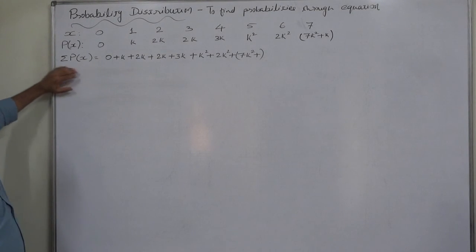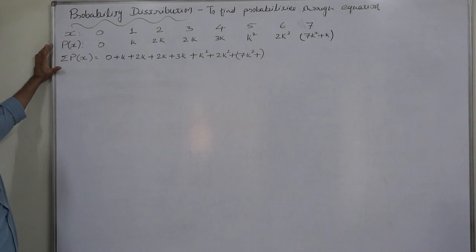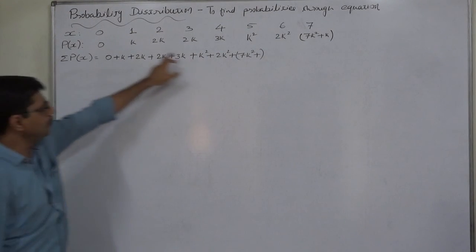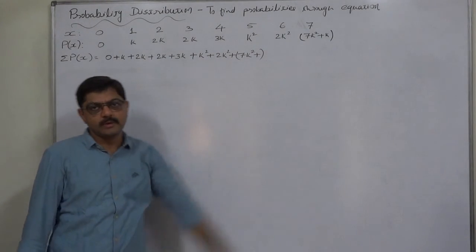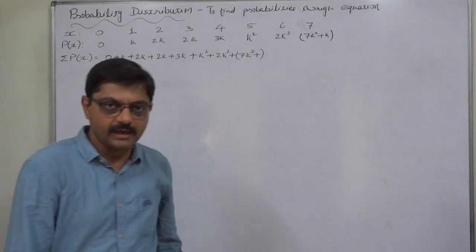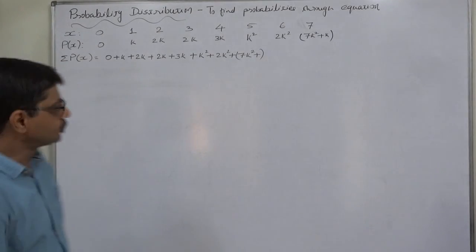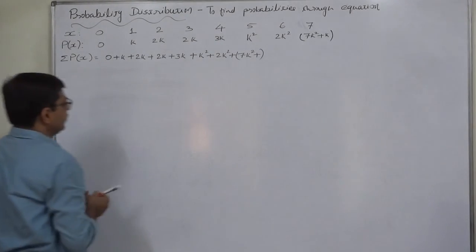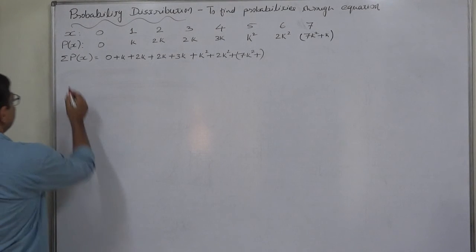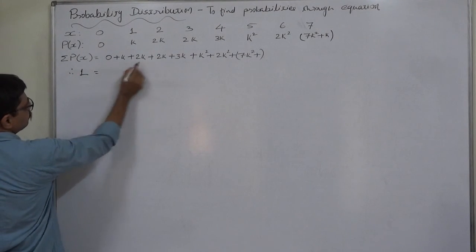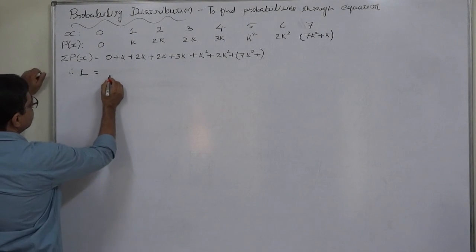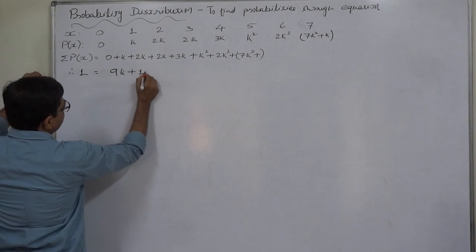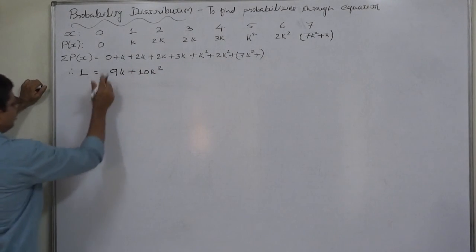As we know that in a probability distribution, the summation of all the probabilities is always 1. So the summation of all these factors is 1. Therefore, 1 equals the summation, which is 9K plus 10K squared.